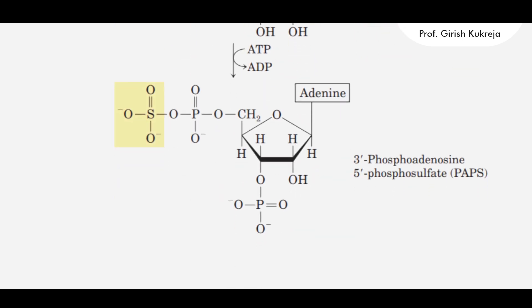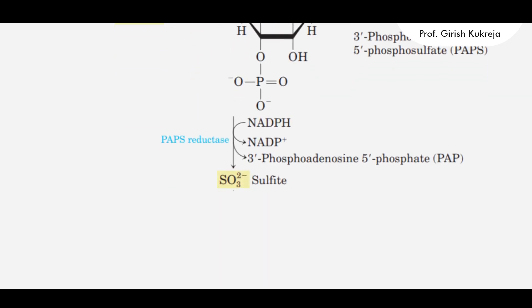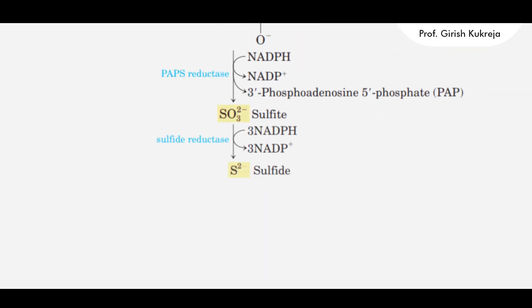The environmental sulphates undergo a 2-step activation to form 3'-phosphoadenosine 5'-phosphosulphate (PAPS). This PAPS then undergoes an 8-electron reduction to form sulphide.